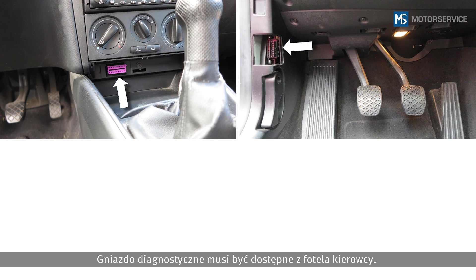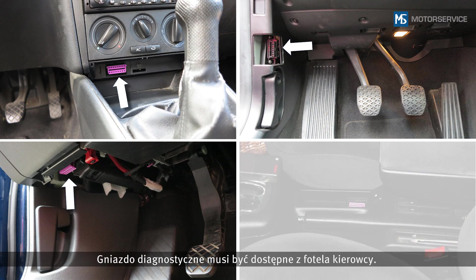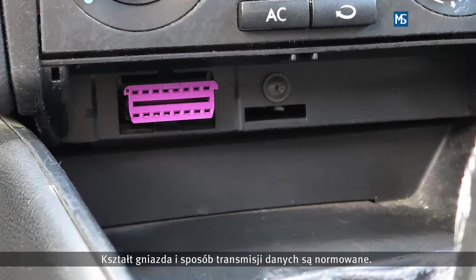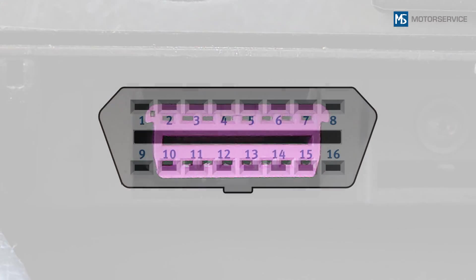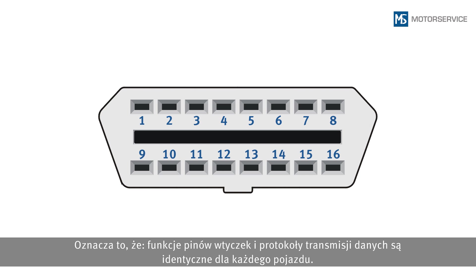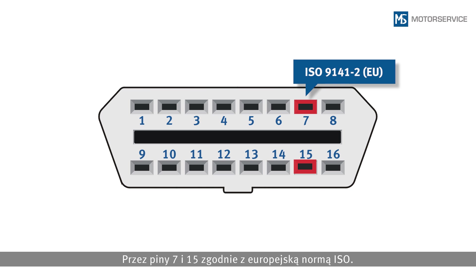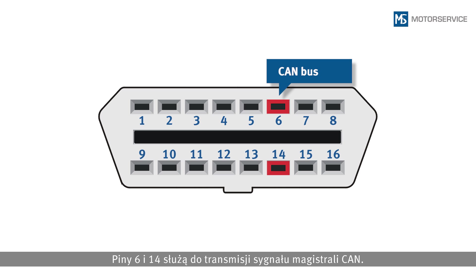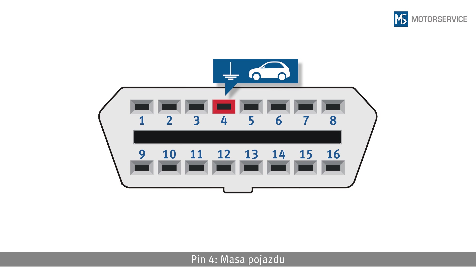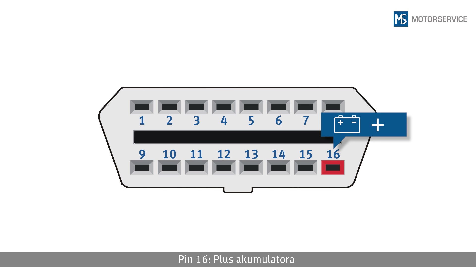The diagnostic connection must be accessible from the driver's seat. The connection and data transfer are standardized, meaning the plug assignment and transfer protocol are the same in all vehicles. Pins 2 and 10 are used for data transfer according to the American SAE standard, whereas pins 7 and 15 are used for the European ISO standard. Pins 6 and 14 are used to transmit the CAN data bus signal. Pin 4 is vehicle ground, pin 5 is signal ground, and pin 16 is the positive battery terminal.